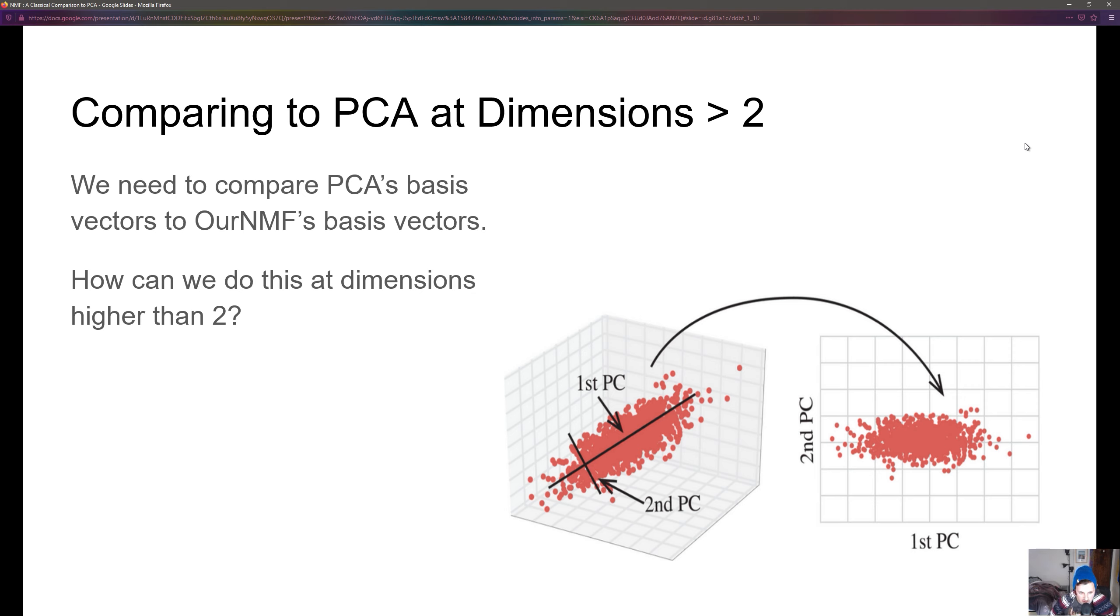It becomes hard to compare at higher dimensions. How do we compare PCA and NMF when we can't simply graph it in two dimensions?